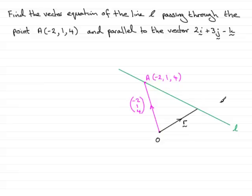And remember that to get to any point on the line, we need a direction vector. That direction vector is the vector 2i + 3j - k, and that's a vector that's parallel to the line. So there's my vector which is parallel to the line, and I'm going to label that (2, 3, -1).